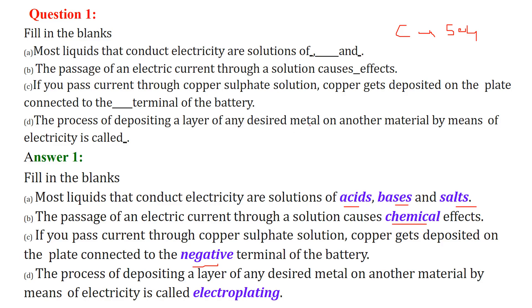The process of depositing a layer of any desired metal on another material by means of electricity is known as electroplating.